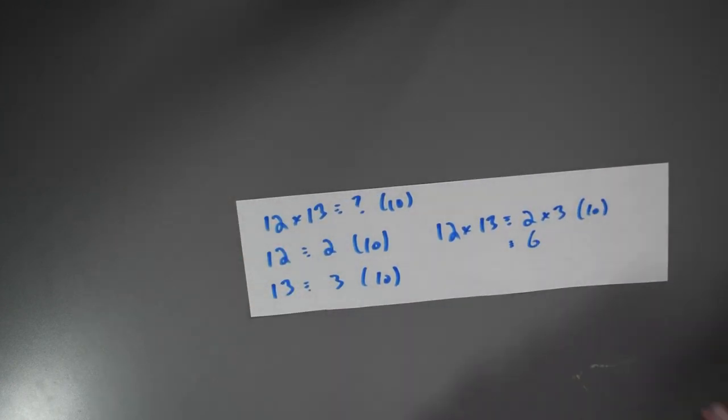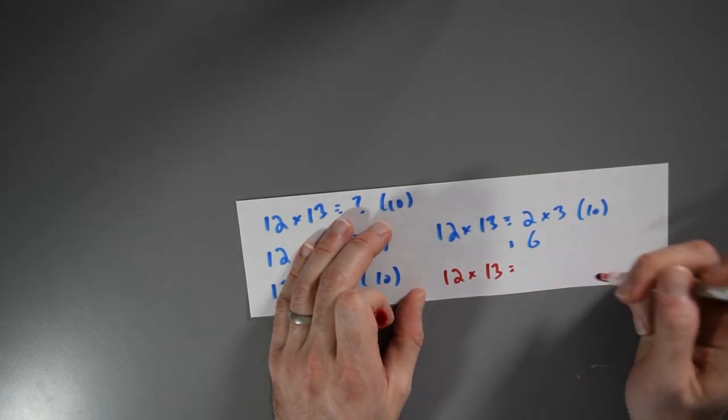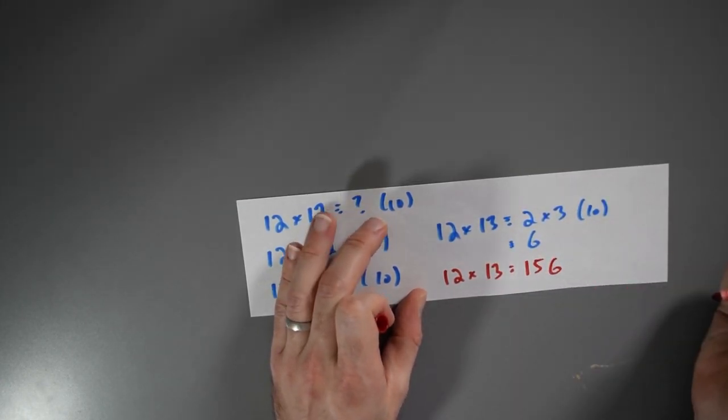And sure enough, if I actually multiply it out, 12 times 13 is actually equal to 156.